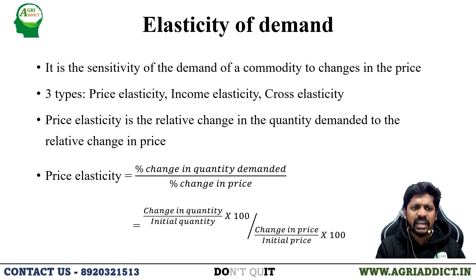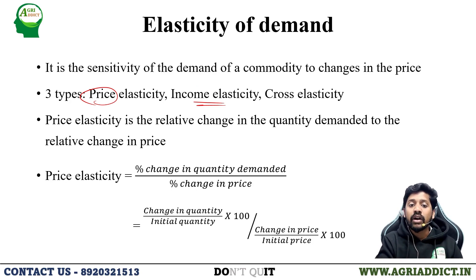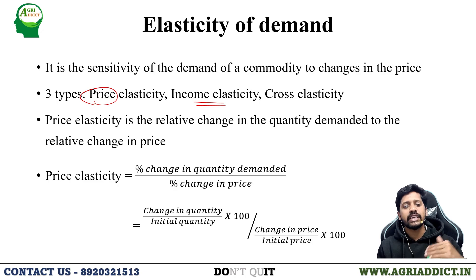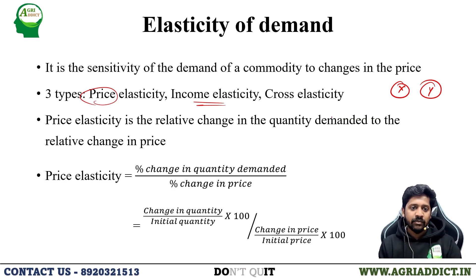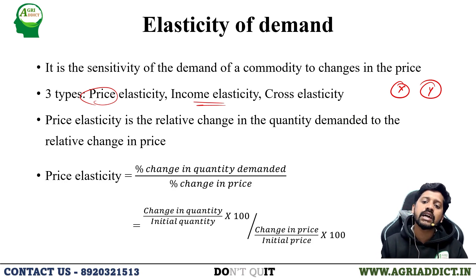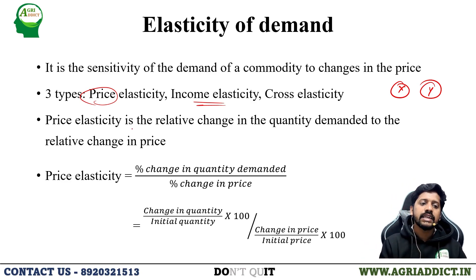For price elasticity, quantity demanded is measured with respect to price. For income elasticity, it is the relative change in quantity demanded to the relative change in income. For cross elasticity, it is the relative change in quantity demanded by a consumer with respect to the relative change in the price of a related commodity. For commodities X and Y, cross elasticity is the relative change in quantity demanded for commodity X to the relative change in the price of commodity Y.